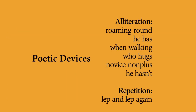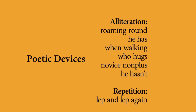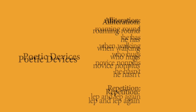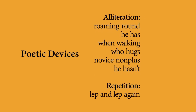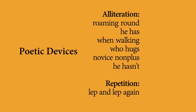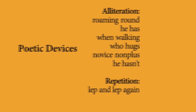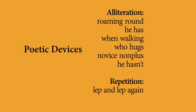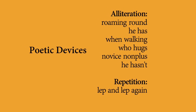Let's look at the poetic devices used in the poem. Alliteration: 'Roaming round', 'He has', 'When walking', 'Who hugs', 'Novice', 'Nonplus', 'He hasn't'. Repetition: 'Lept and lept again'.